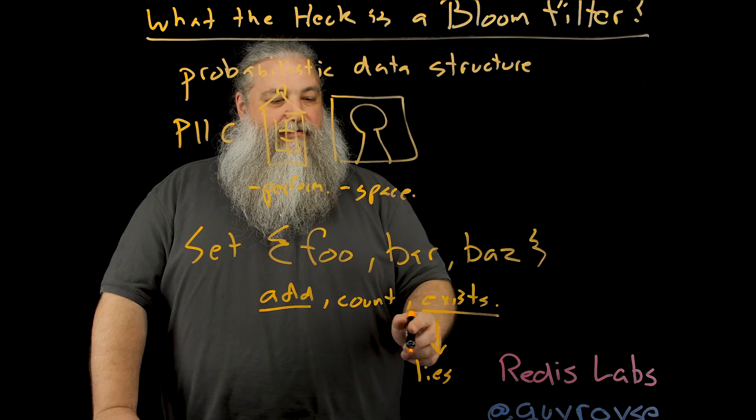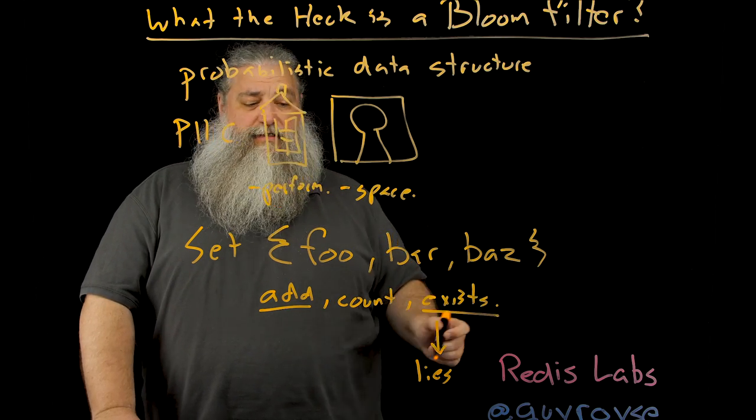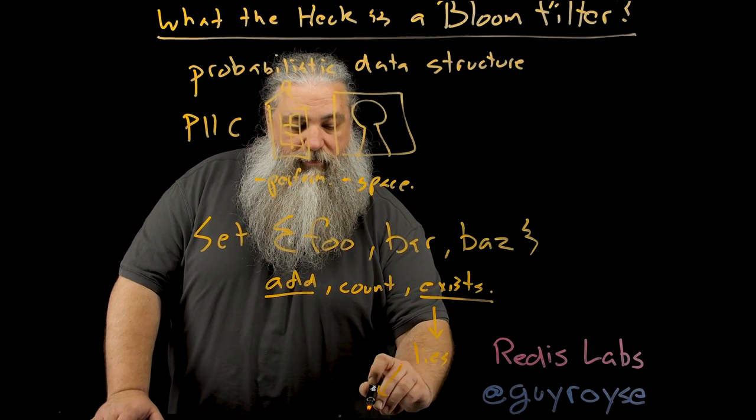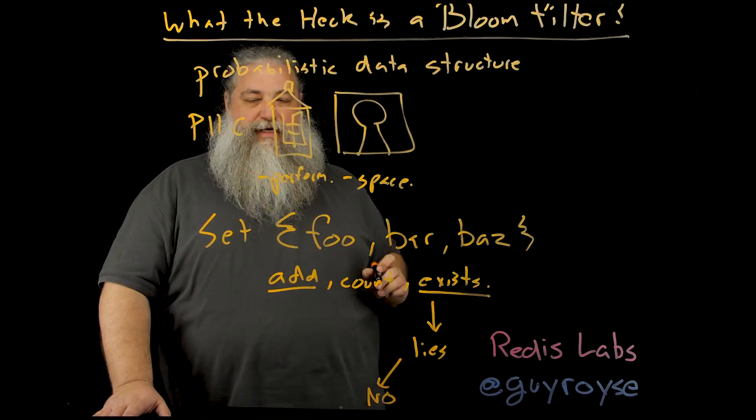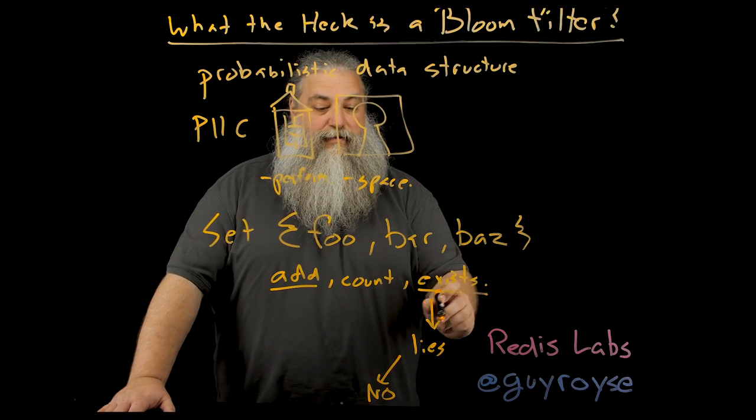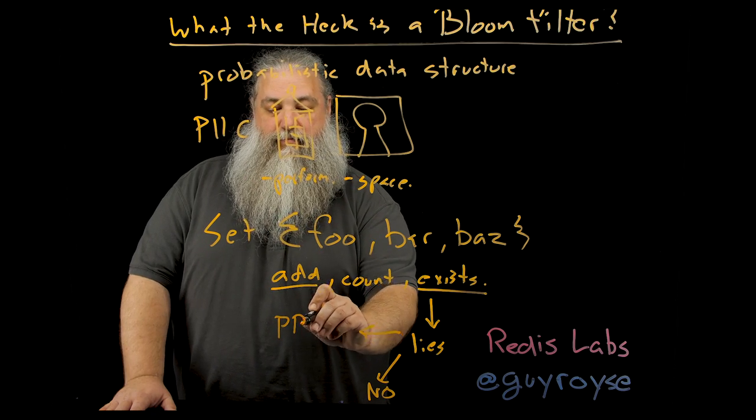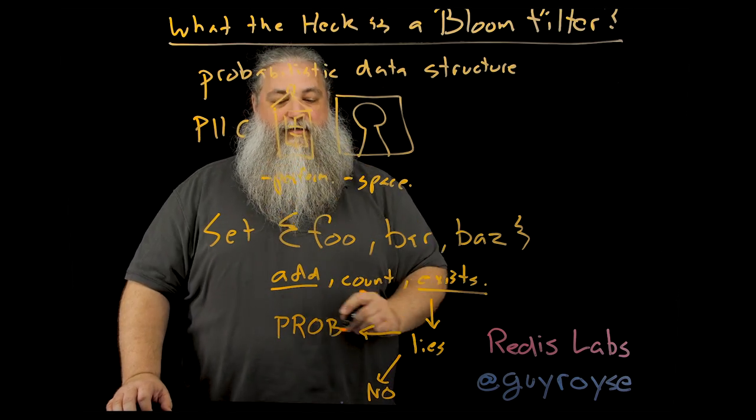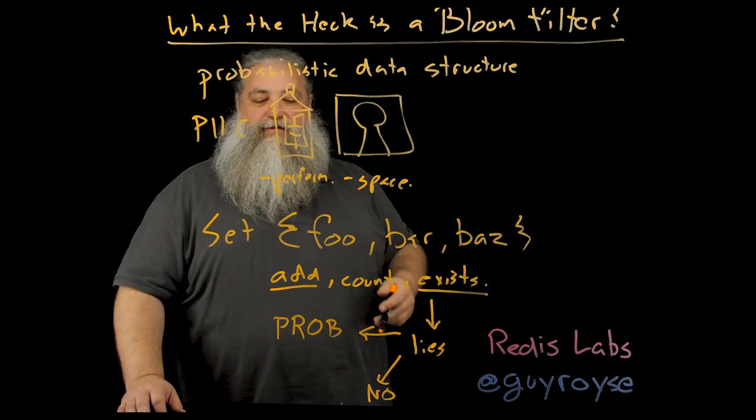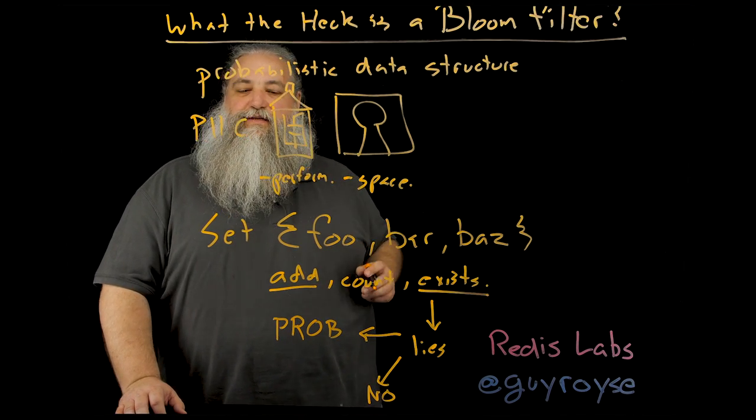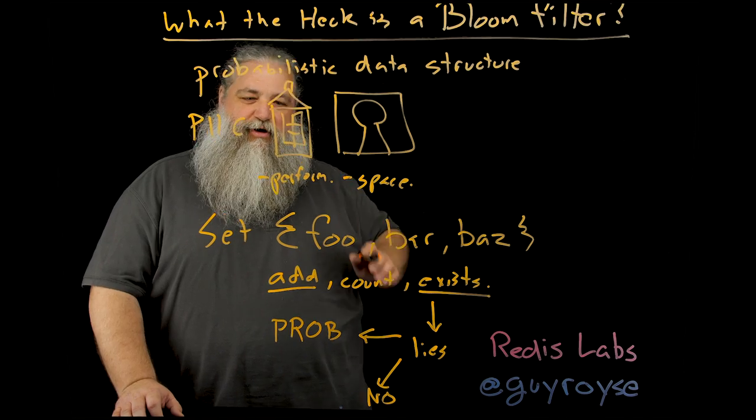And the way it lies is that when you ask if something exists, it will say no, it's not in the set. Or it will say, probably it is in the set. And so that's the probabilistic aspect of it. Either no, it's definitely not in this set, or it's probably in the set. But it could be wrong.